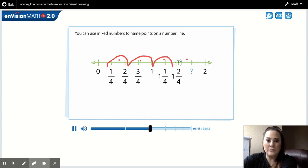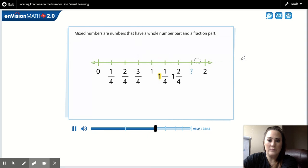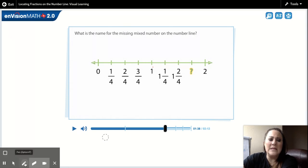You can use mixed numbers to name points on a number line. Mixed numbers are numbers that have a whole number part and a fraction part. Each mixed number names a point on the number line. What is the name for the missing mixed number on the number line? Okay, so the only thing that this mixed number is really identifying is the new place that you are on the number line.